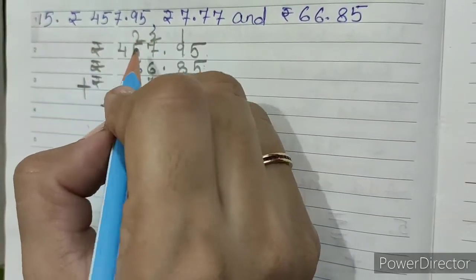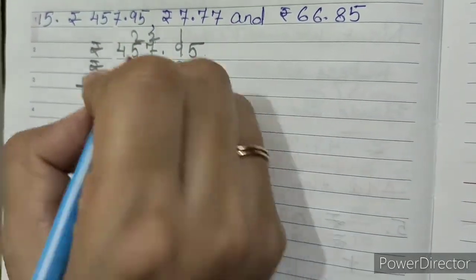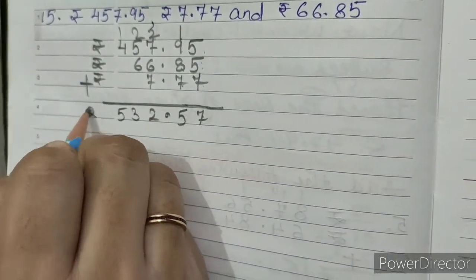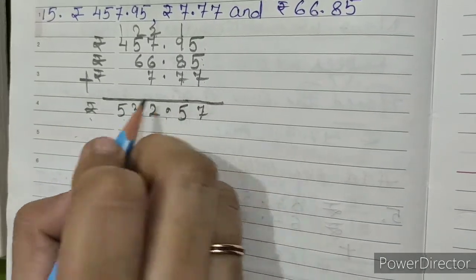Write 2 carry 2. 5 plus 2 equals 7, 7 plus 6 equals 13, write 3 carry 1. 4 plus 1 equals 5. So our answer is rupees 532.57.